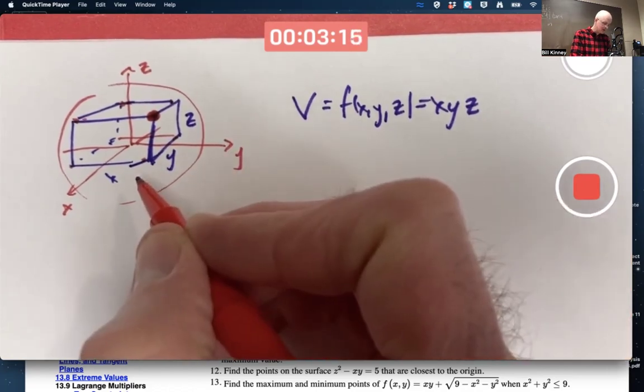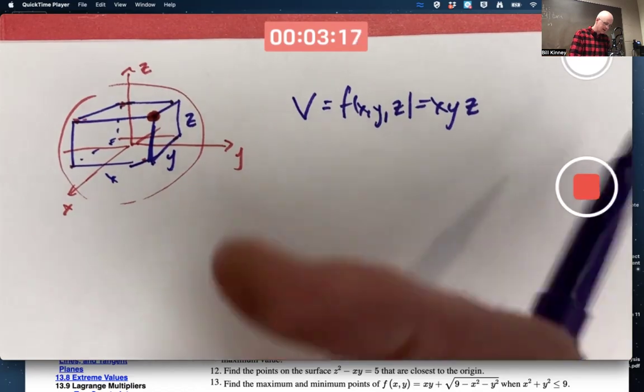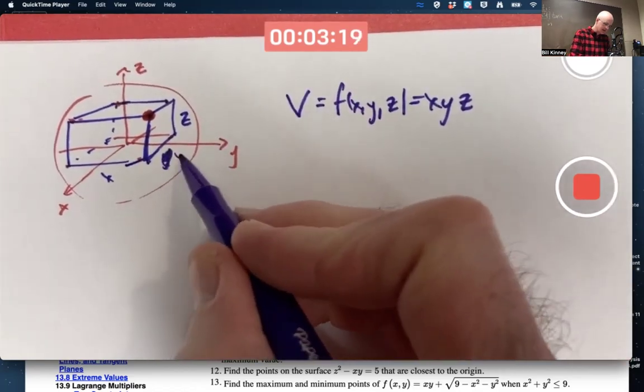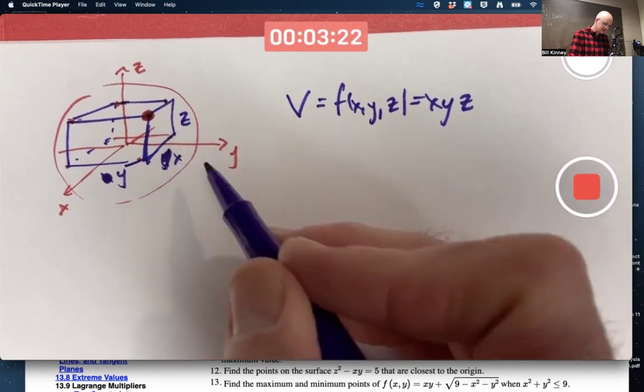I should have labeled X, Y, and Z differently. Okay, this is now X. That's Y. And this is Z still.